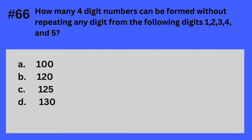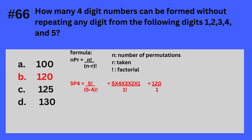Question 66. How many four-digit numbers can be formed without repeating any digit from the digits 1, 2, 3, 4, and 5? A. 100, B. 120, C. 125, D. 130. The answer is B — 120. This is a permutation problem. The formula is n factorial divided by the factorial of (n minus r), where n is 5 and r is 4. So 5! divided by (5−4)! equals 120 divided by 1, which is 120.